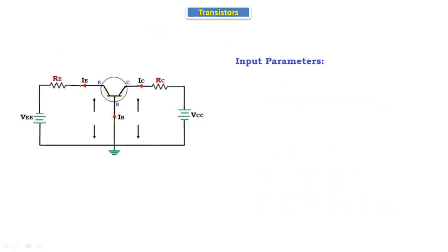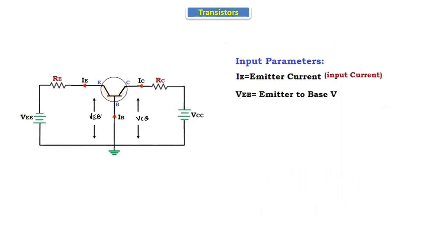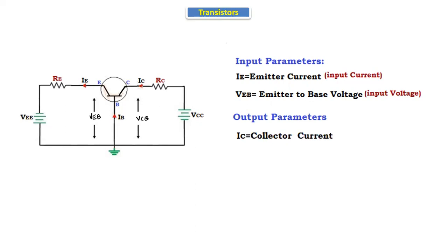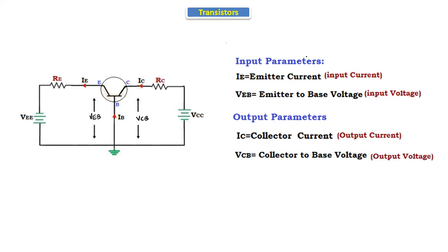Now let's see the input parameters and the output parameters. VEB and VCB — the left side of the transistor is the input parameters and the right side is the output parameters. IE is called as the emitter current and it is also called as the input current. VEB is called as the emitter to base voltage and it is also called as the input voltage. IC is called as the collector current and it is the output current. VCB is called as the collector to base voltage and it is also called as the output voltage.